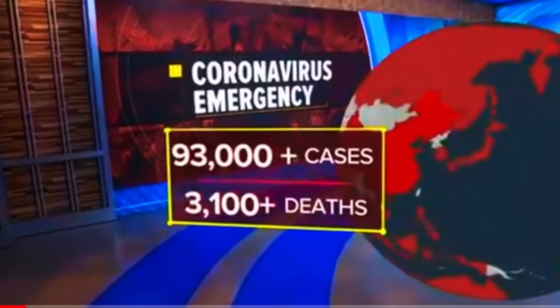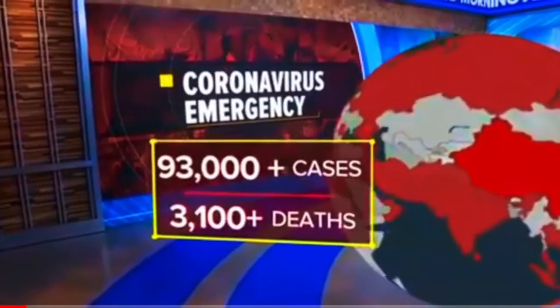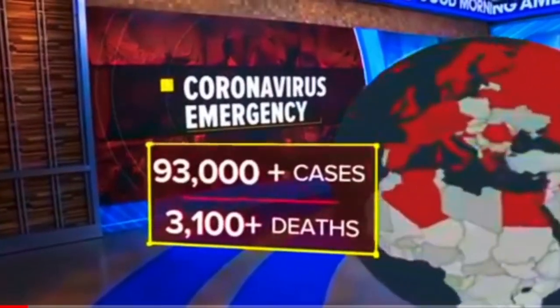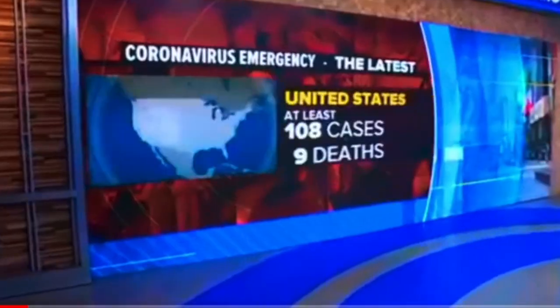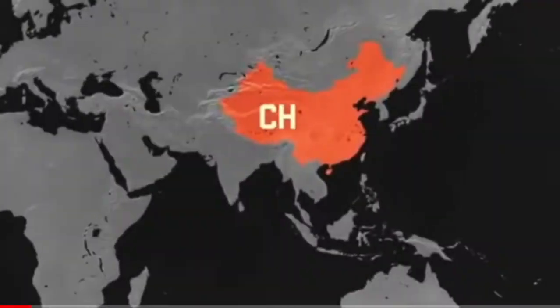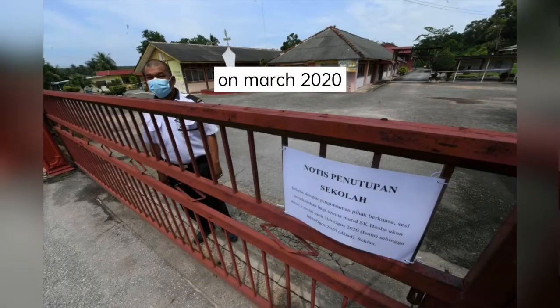Meanwhile, here in the U.S., there are now at least 108 cases, and the death toll of the coronavirus is rising. School reopening will begin on Wednesday, 15 July.